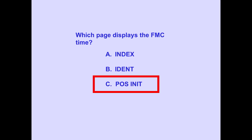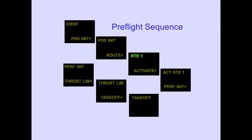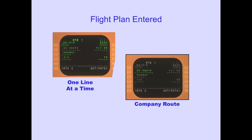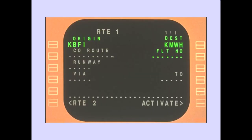The next page in the pre-flight sequence is the route page. There are two ways the flight plan can be entered: one line at a time by filling in the boxed and dashed lines, or all at once using the company route line. The company route line will be discussed later. The origin and destination are entered using the four-letter ICAO airport identifiers. The flight number can also be entered.